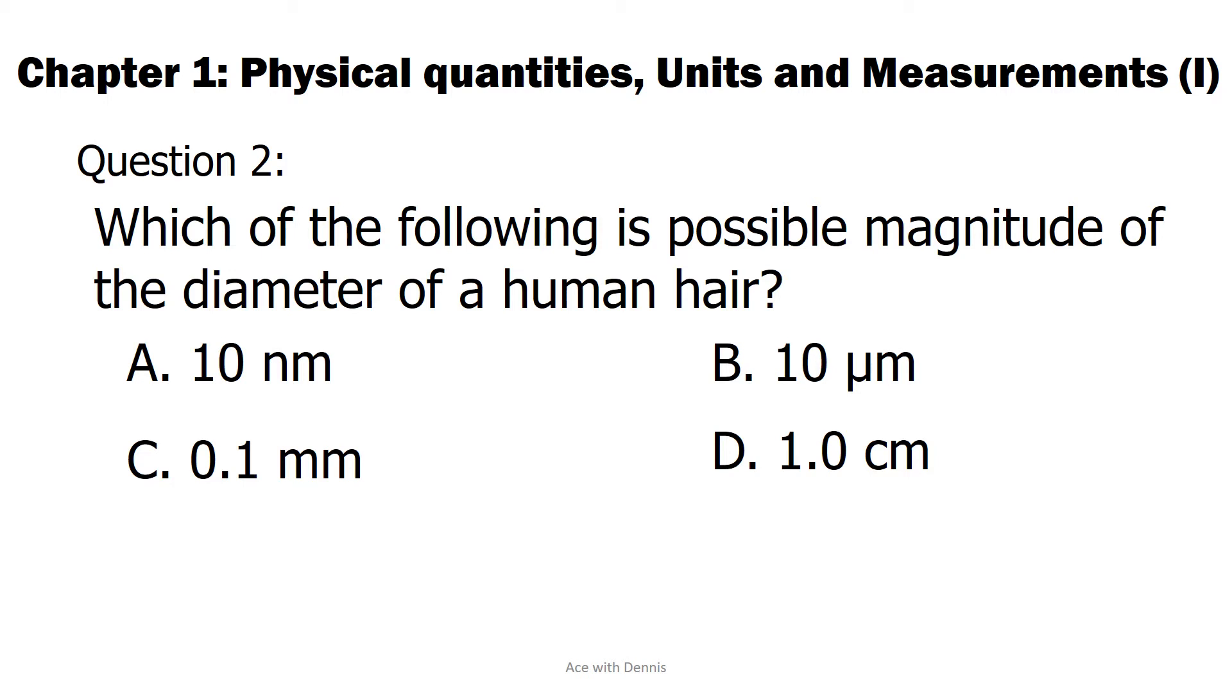The answer is C. 0.1 millimeters. You can convert the rest of the answers into the same unit to compare easily. 10 nanometers equals 1 times 10 to the power negative 5 millimeters. 10 micrometers equals 0.01 millimeters. 1.0 centimeters equals 10 millimeters. These magnitudes do not make sense for the diameter of a typical human hair.